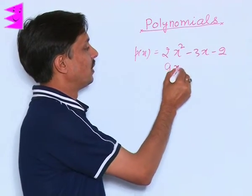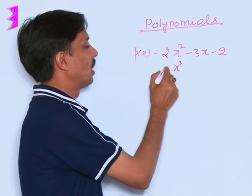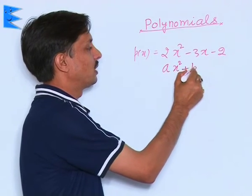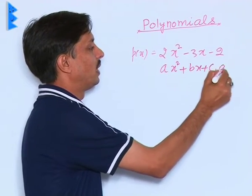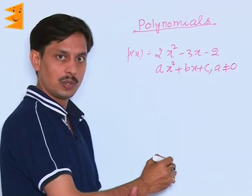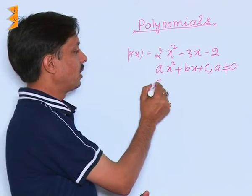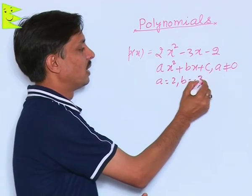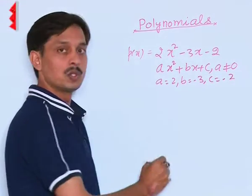First of all, you can say that the standard form of the quadratic polynomial is Ax² + Bx + C, provided A is not equal to 0. You can compare: A is 2, B is -3, C is -2.